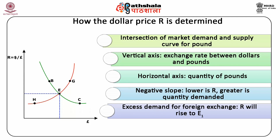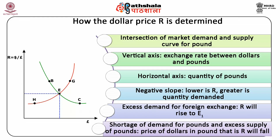Suppose there is excess demand for foreign exchange; then the dollar price of pounds, R, will rise to E1, shown by point CD in the diagram. Appreciation of the currency: suppose US demand for pounds shifts as a result of increased demand for British goods, creating a shortage of demand for pounds and excess supply of pounds; then the price of dollars in pounds, R, will fall — this is depreciation of the currency.